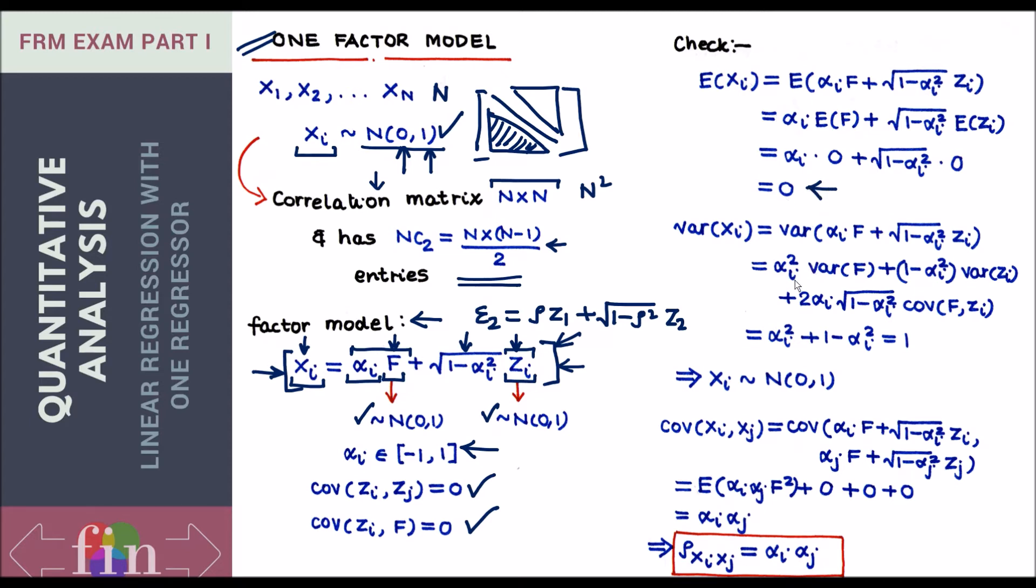Now let's check the second part: is the variance of x one for every x? Just follow this. I have exactly the same proof which I did for variance of epsilon two in the previous video. It's the same proof and you get actually one. So this part is fine. Now comes the critical part. We've proved that xi has the distribution which we wanted, but does xi's dependence with another xj, does that problem get solved?